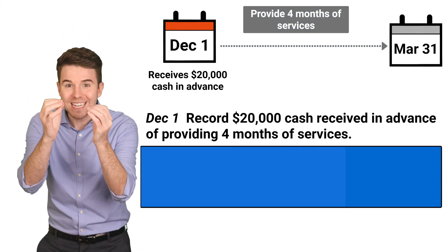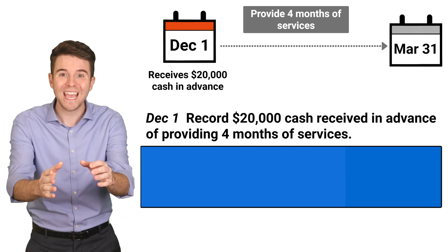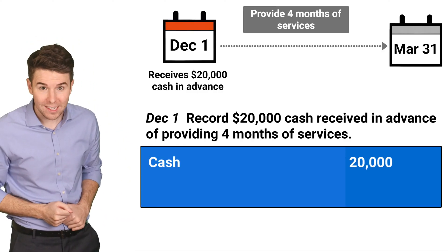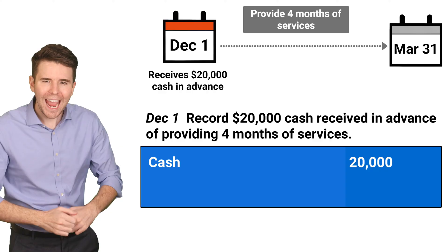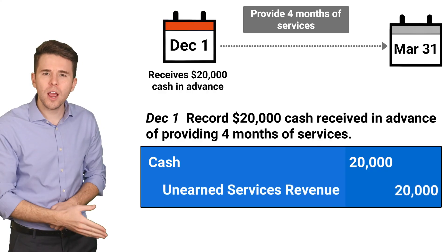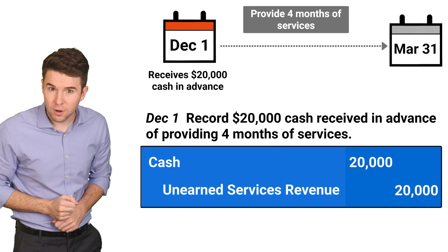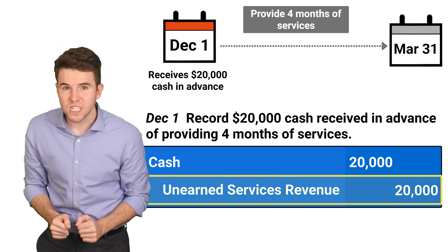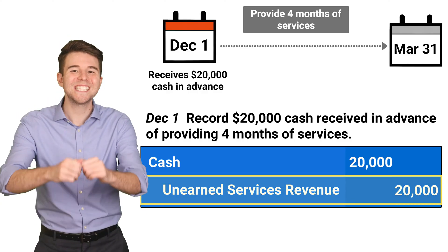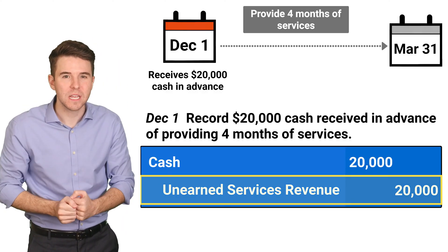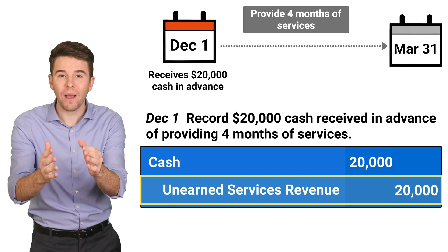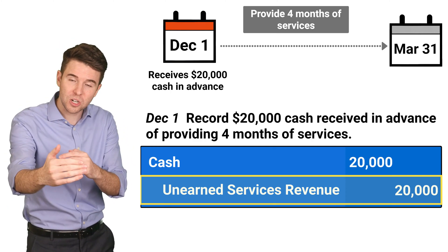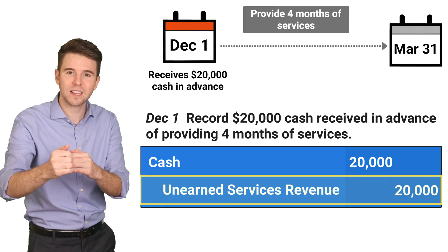To record the initial entry, we debit cash for $20,000 and credit unearned services revenue for $20,000. Unearned services revenue is a liability account because we now have an obligation to provide services in the future to the customer.